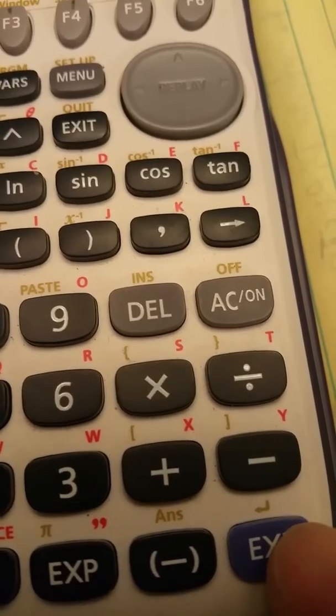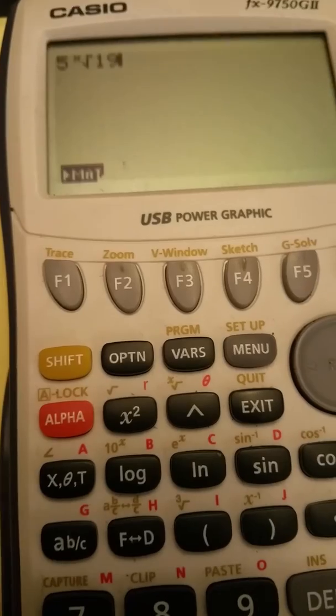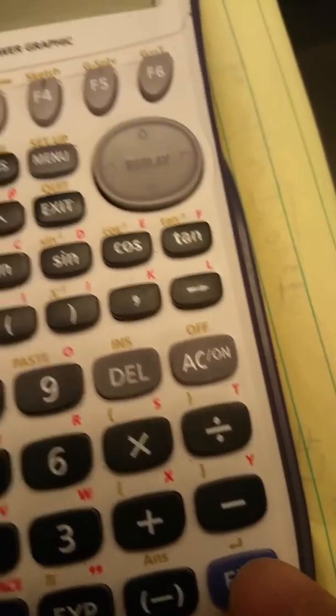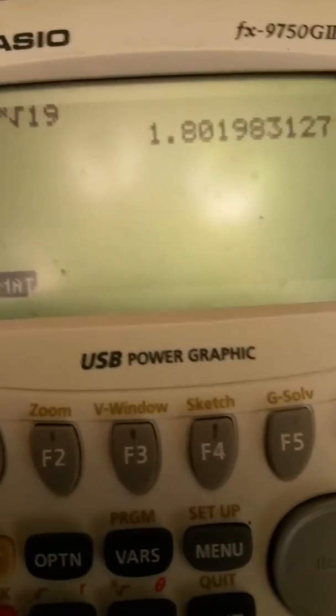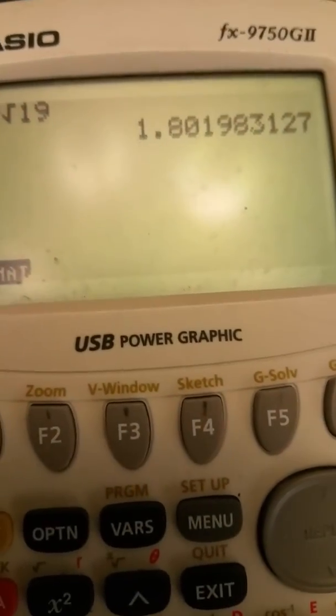So anytime you need to get something done, after you've got an expression in on the screen, if you need it to actually be carried out, you need to hit the execute key. Execute and you get that number 1.801983127.